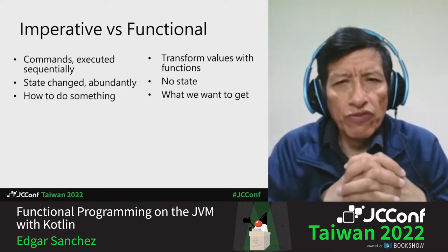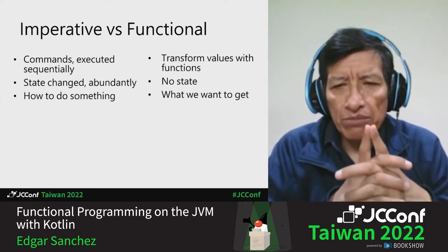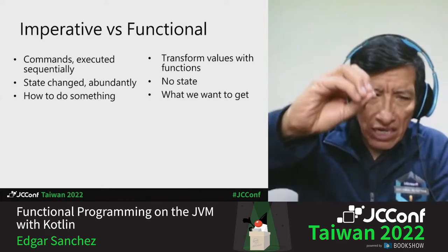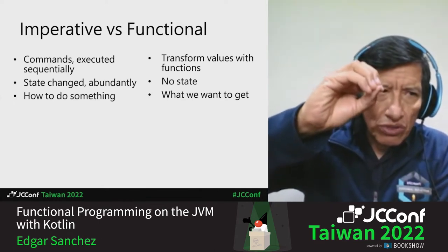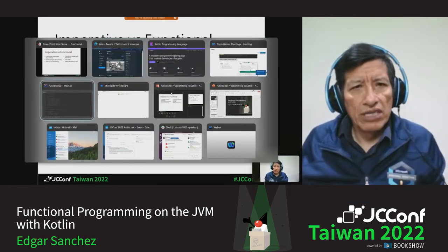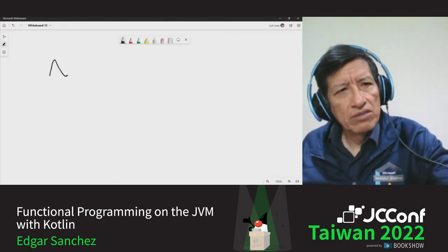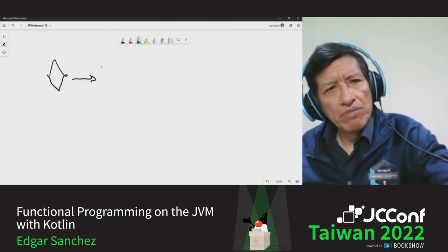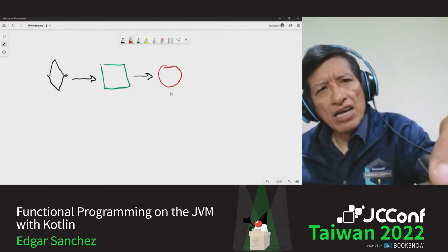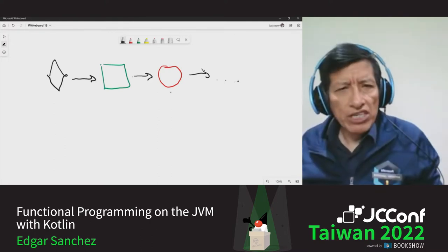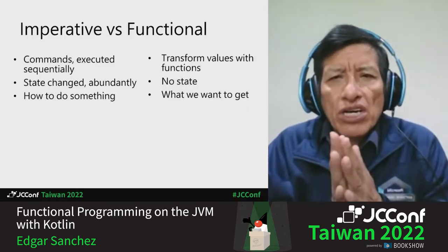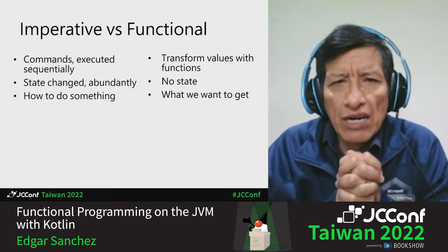When you use imperative programming, you tell step by step how to do something — it's like a recipe for cooking. On the other hand, when you use functional programming, you think in terms of transformations. You start with something, then you change it a little bit, then with that changed thing you change it even more. You apply a first transformation and it becomes this, then another transformation and it becomes this, and so on, until you end up with what you want.